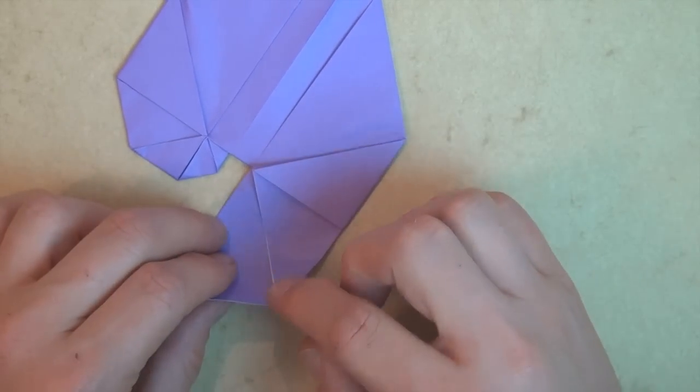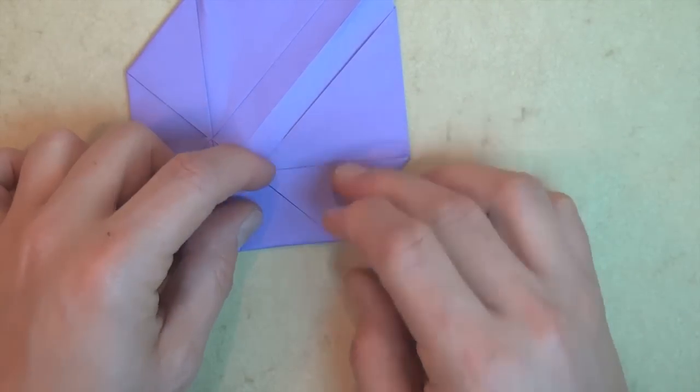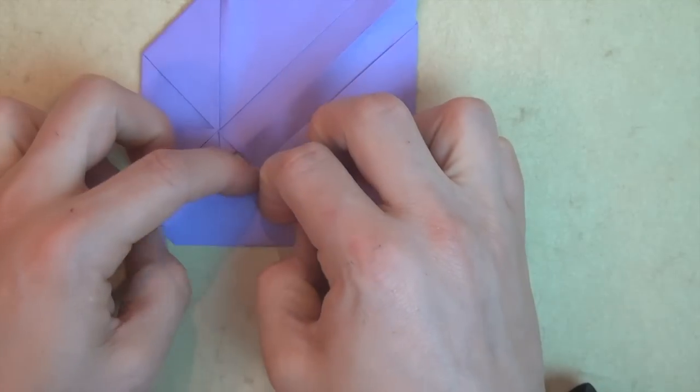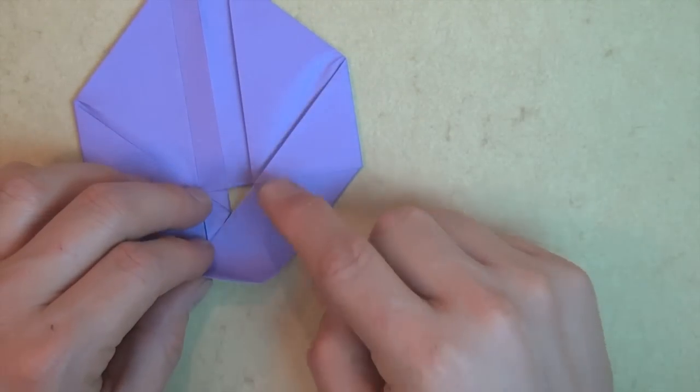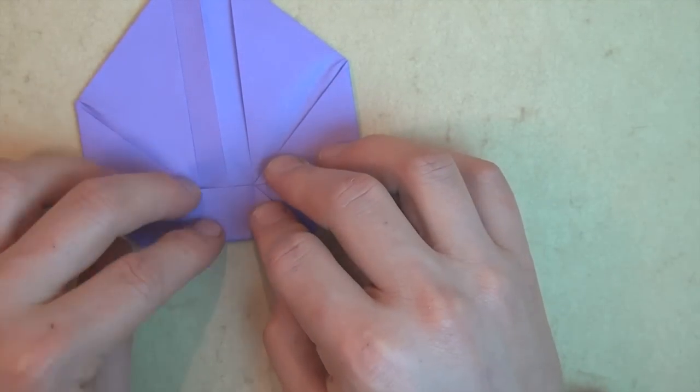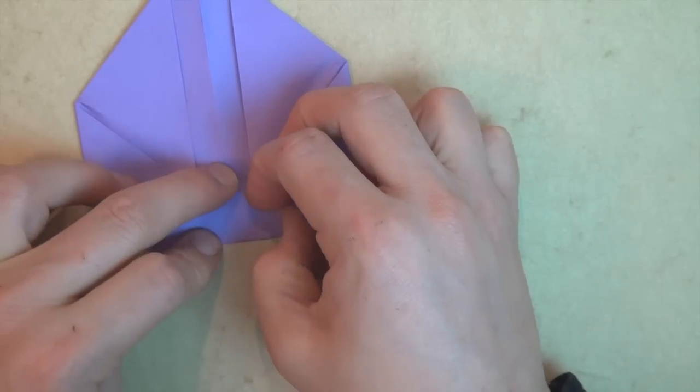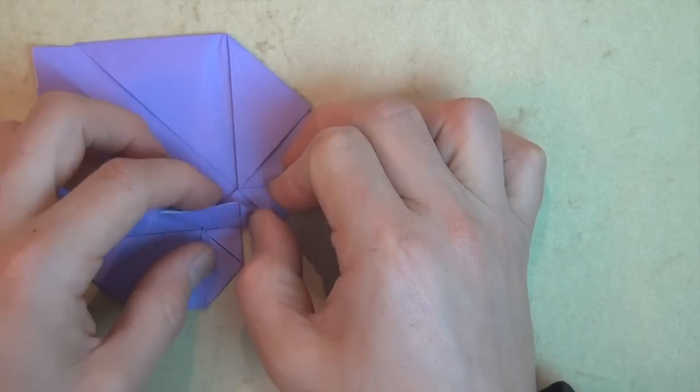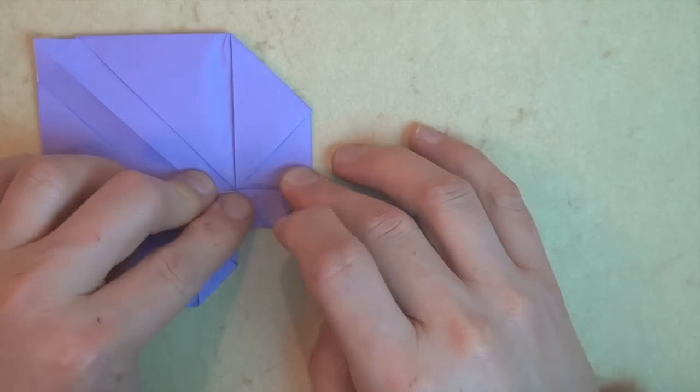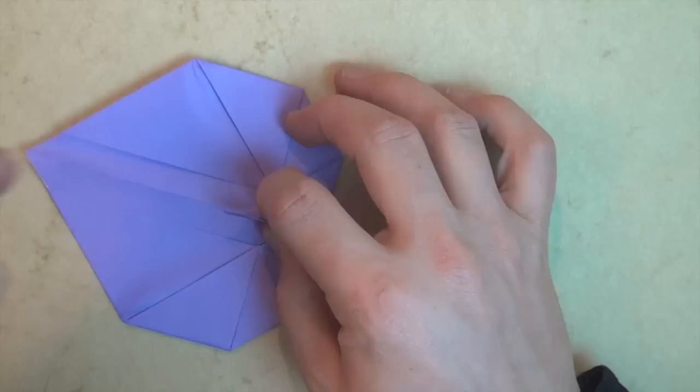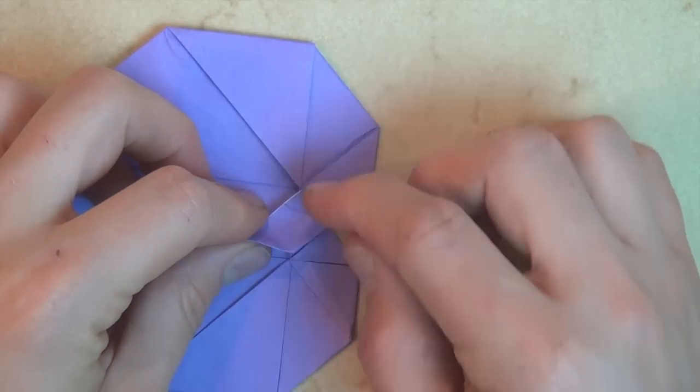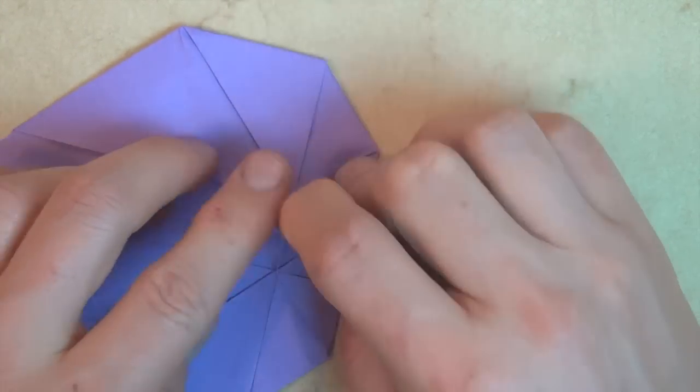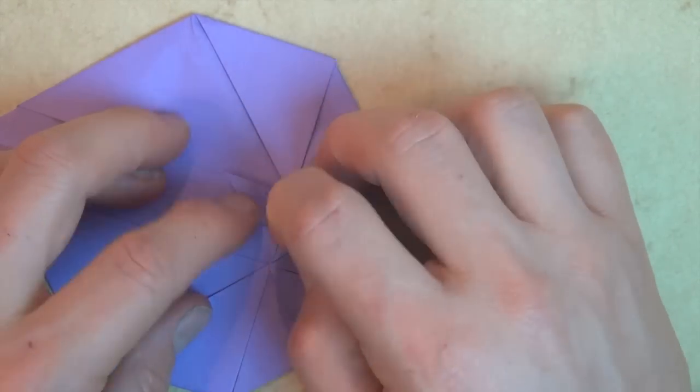And rotate and fold this corner to here. And rotate and fold this corner to here. And fold this to here. If it's not perfect, it should still be able to fly, but do your best.